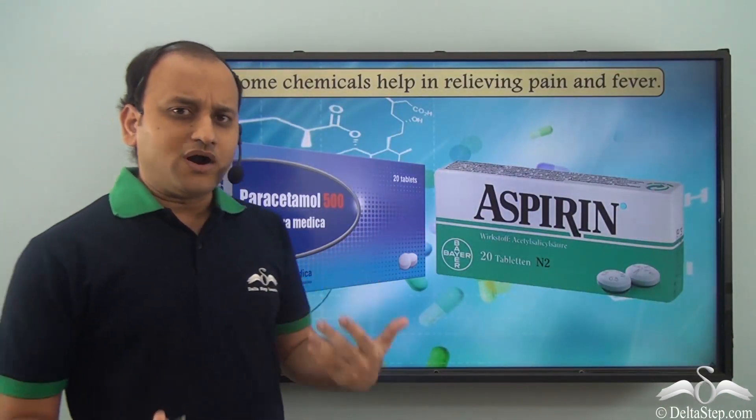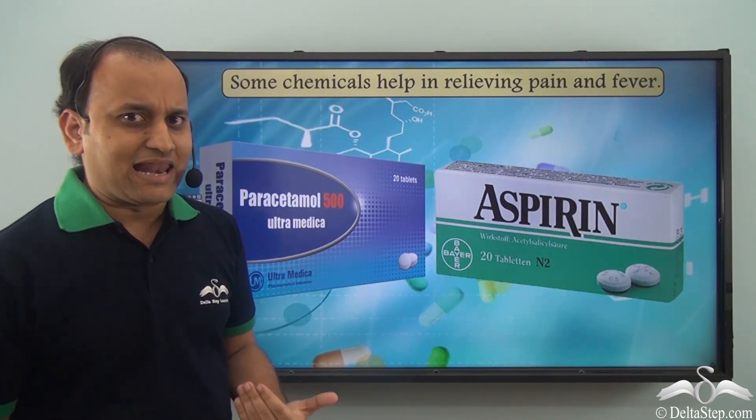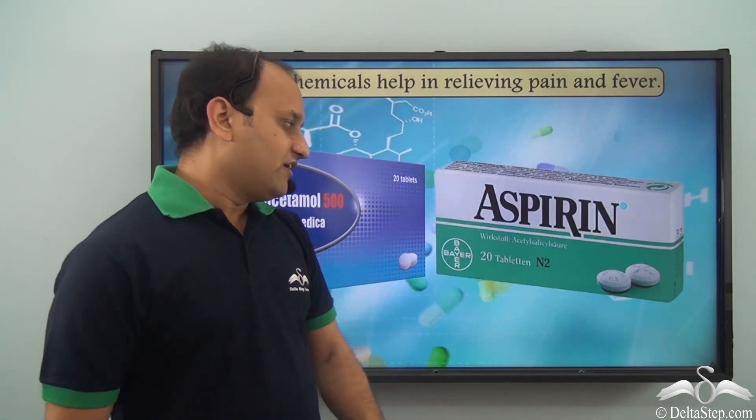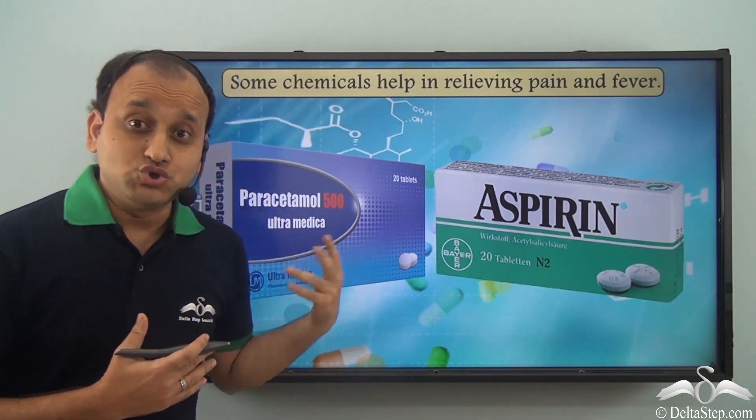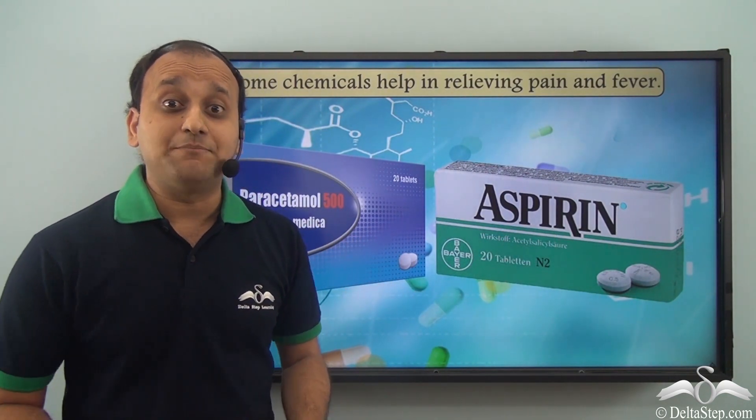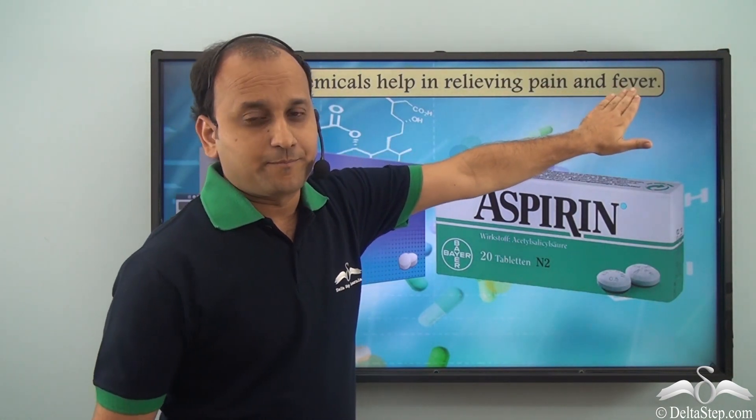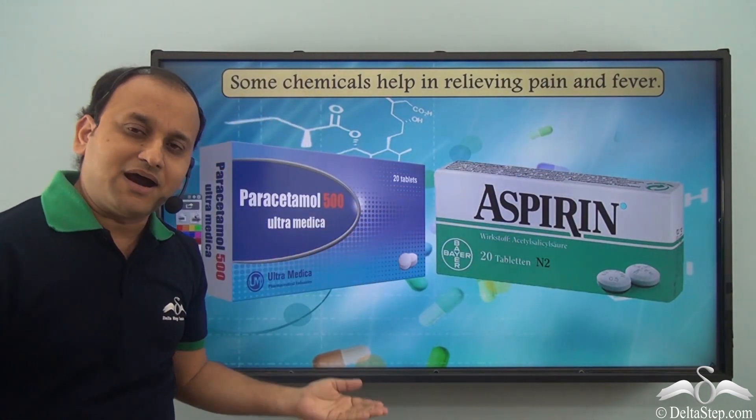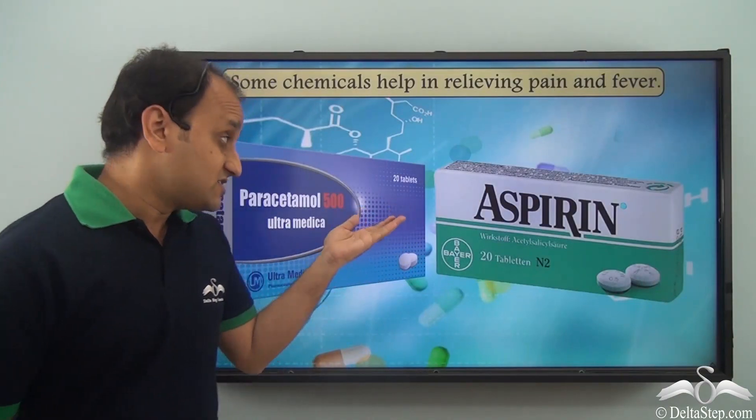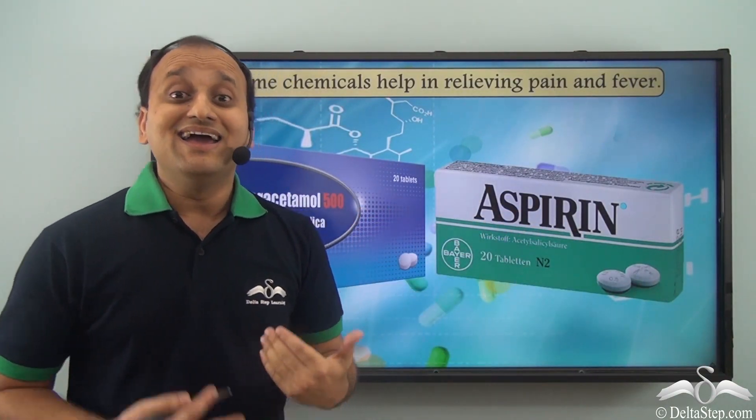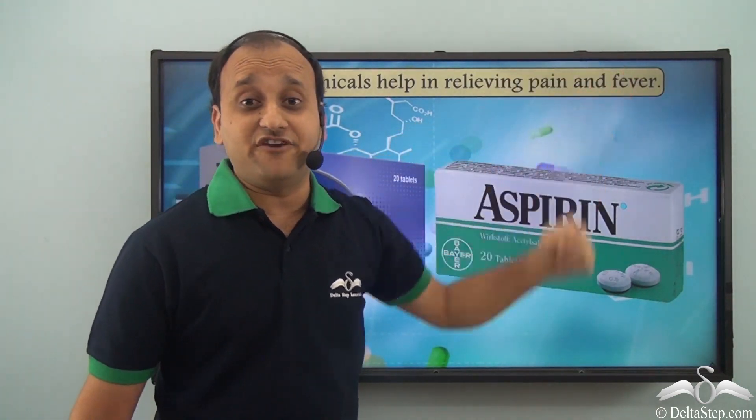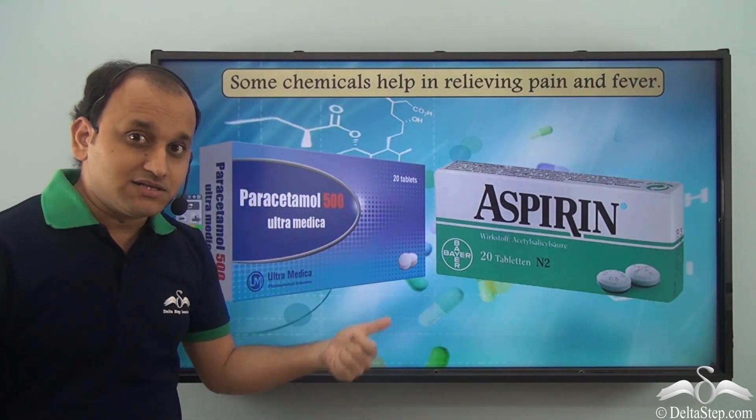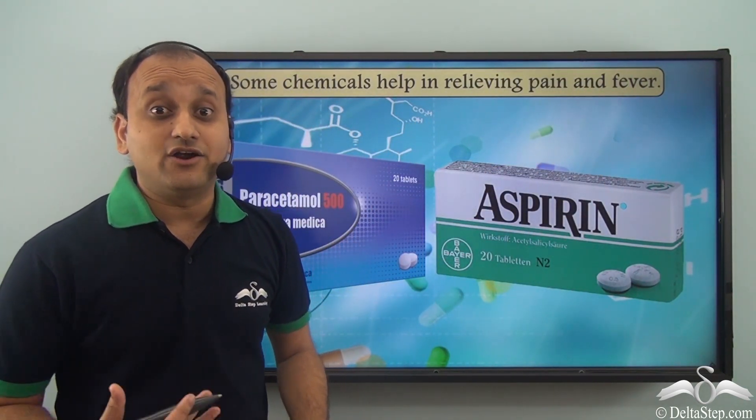Now what are some common chemicals that help us to relieve pain and fever? Well, paracetamol and aspirin are two of the medicines which help us relieve pain and fever, and these are nothing but chemicals. So paracetamol and aspirin are names of some chemicals that help us relieve pain and fever. So without these chemicals we cannot get rid of these problems of our body.